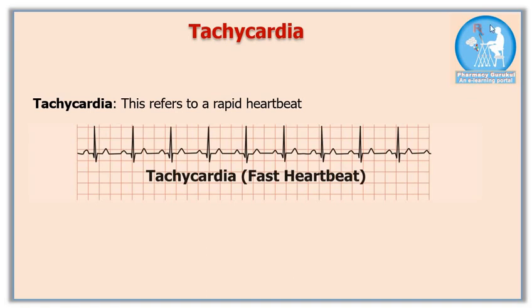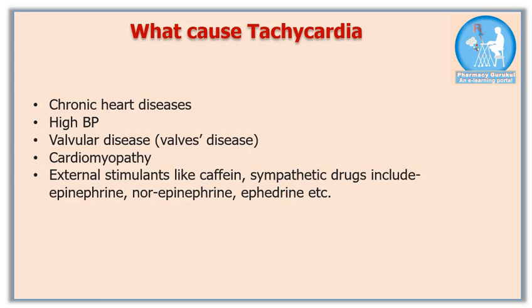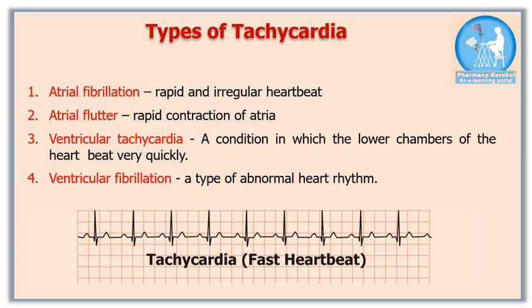When your heart is beating too fast — more than 100 beats per minute — this condition is referred to as tachycardia. The most common causes include chronic heart diseases, high blood pressure, valve disease, cardiomyopathy, and external stimulants such as high caffeine intake or sympathetic drugs like epinephrine, norepinephrine, and ephedrine. Acute and short-term tachycardia is also experienced during fear, stress, and heat conditions.